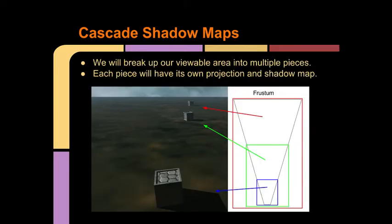The cascade technique will have us break up our view frustum into multiple different sub-frustums, as represented by the diagram. Each of these sub-frustums will then have its own shadow map, and each could be the same or different resolutions. Shadows in the first and smallest frustum will have the highest quality, while those in the last will have the worst quality.